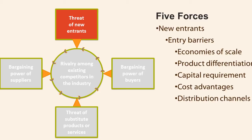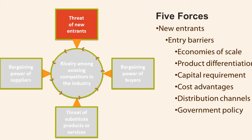Access to distribution channels is another barrier — a newcomer must secure distribution for its product or service. A new food product, for example, must displace others from supermarket shelves via price, promotions, or intense selling efforts. Governments can also limit or foreclose entry through license requirements and limits on access to raw materials. Most countries have regulations in industries such as trucking, liquor, retailing, and fishing, as well as controls like pollution standards and safety regulations.